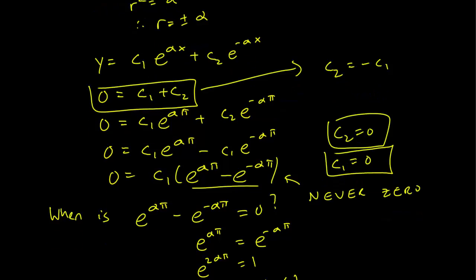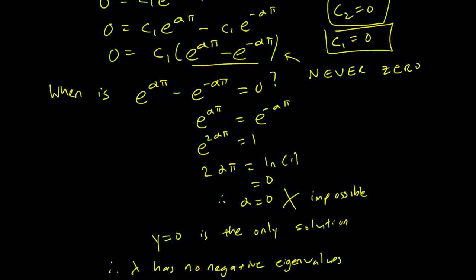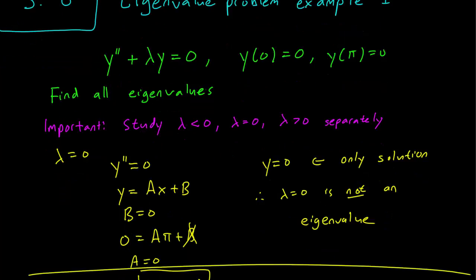And again, y equals zero is the only solution. This implies that lambda has no negative eigenvalues. So for no negative number lambda in the original problem will we have infinitely many solutions. So all that remains is to check the case where lambda is positive. Let's do that.